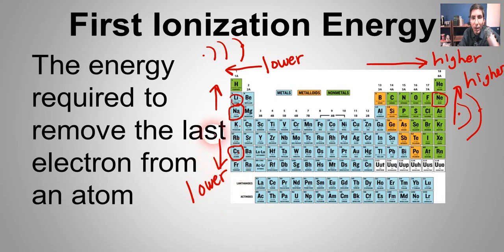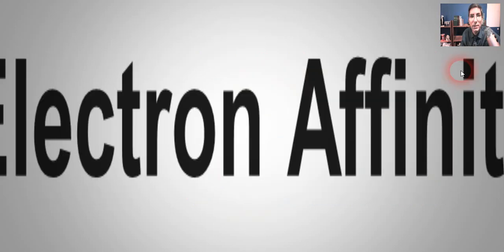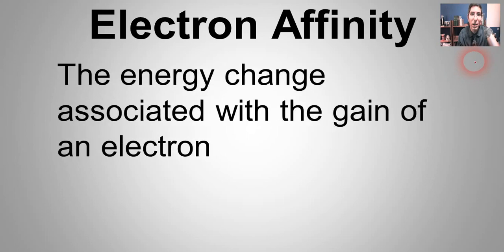So the trend once again: as you go down and to the left, first ionization energy is lower. As you go to the right and to the top, first ionization energy is higher. In AP chemistry we also talk about other trends such as effective nuclear charge, shielding effect, and electron affinity. Electron affinity is defined as the energy change associated with the gain of an electron — we'll cover the trend for that in a future course.